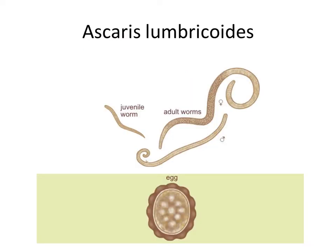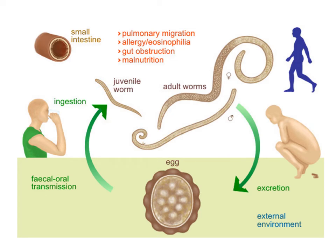Ascaris lumbricoides — here you can see the adult worms, with separate sexes, a juvenile worm, and the egg. Here is the external appearance of the animal. It invades mainly humans. During excretion, the eggs leave the human body in the excrements, and again they can be swallowed with dust particles or unwashed food and invade another person. It can cause a lot of troubles, including lung problems, allergies, gut obstruction, and others. They are rarely deadly but can be dangerous.